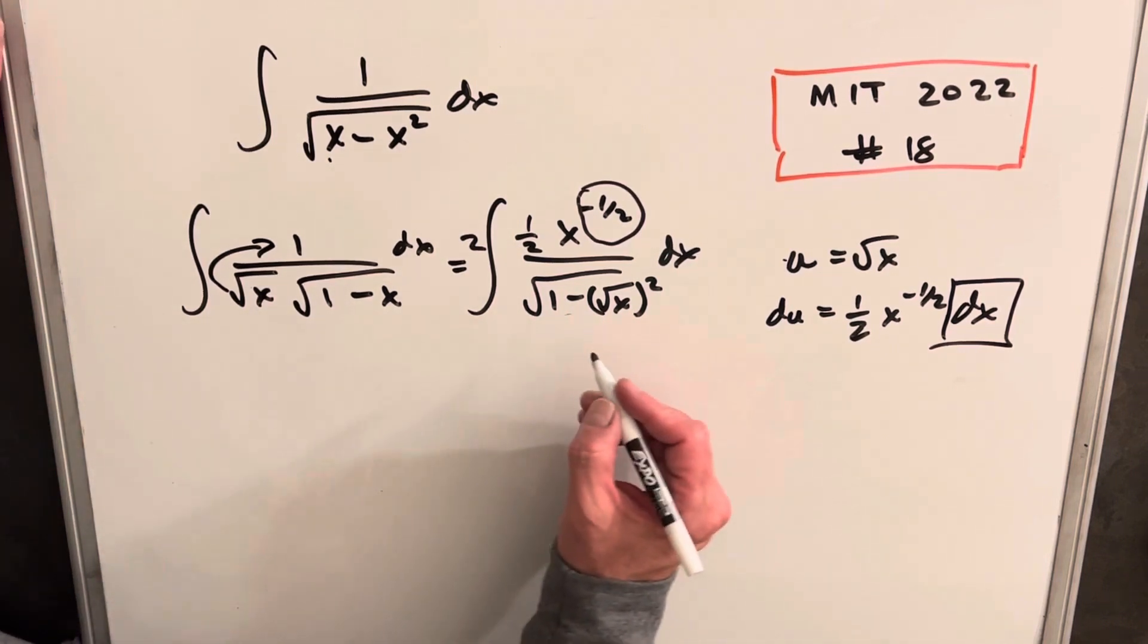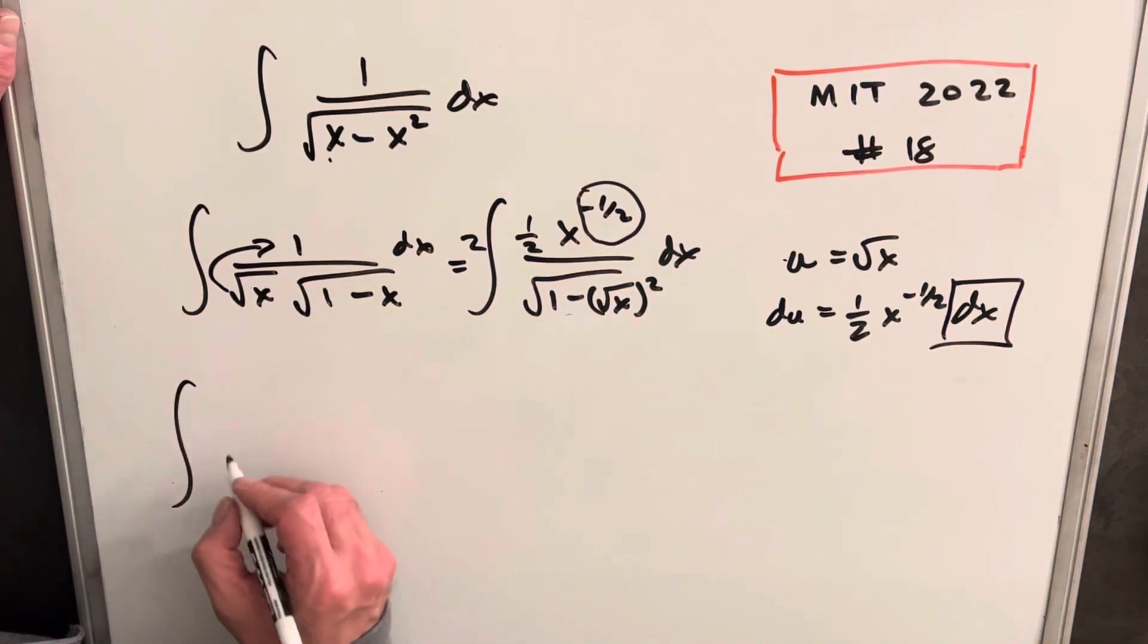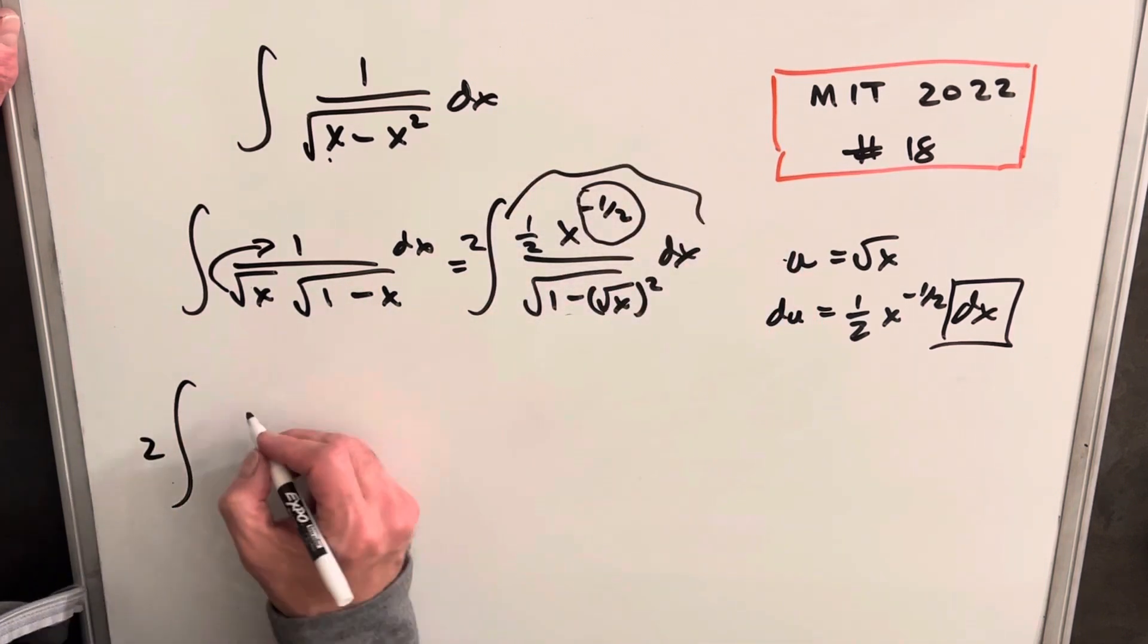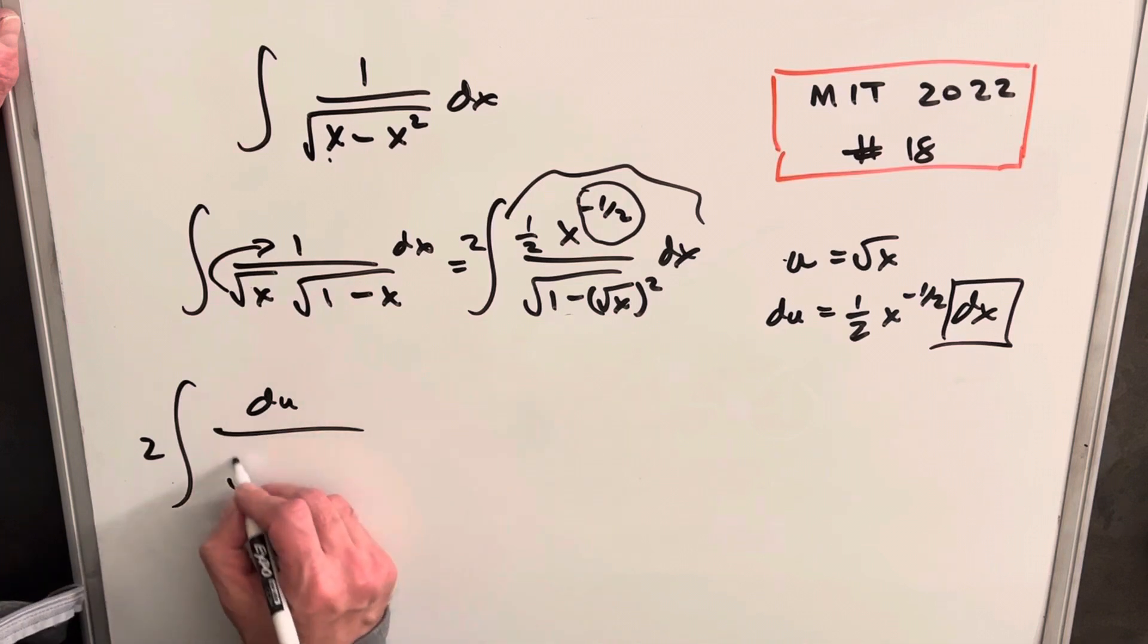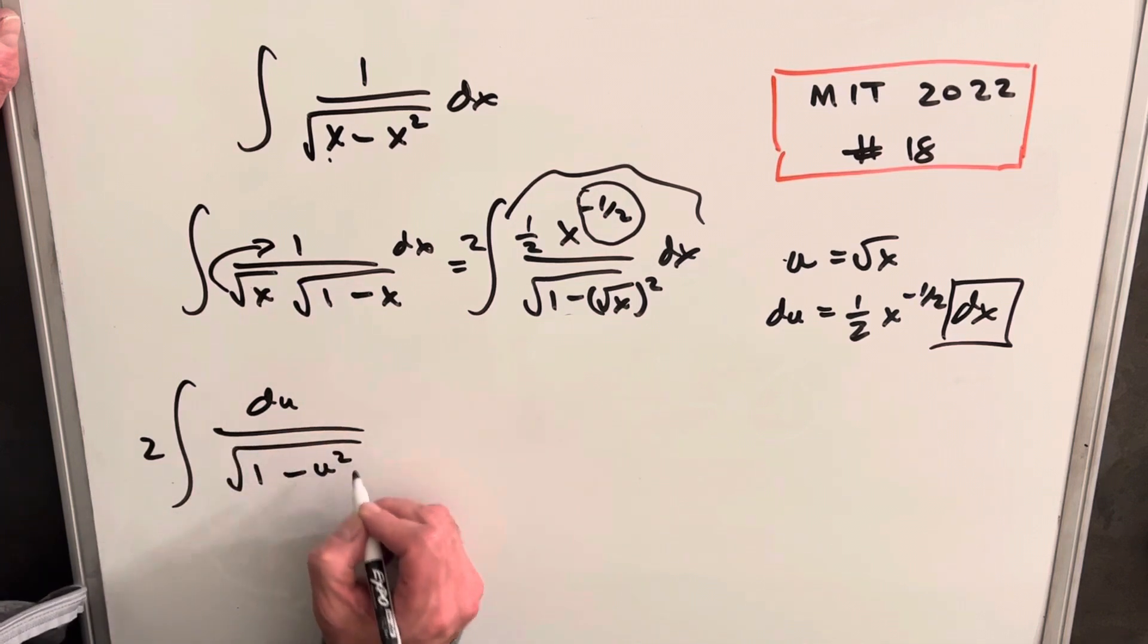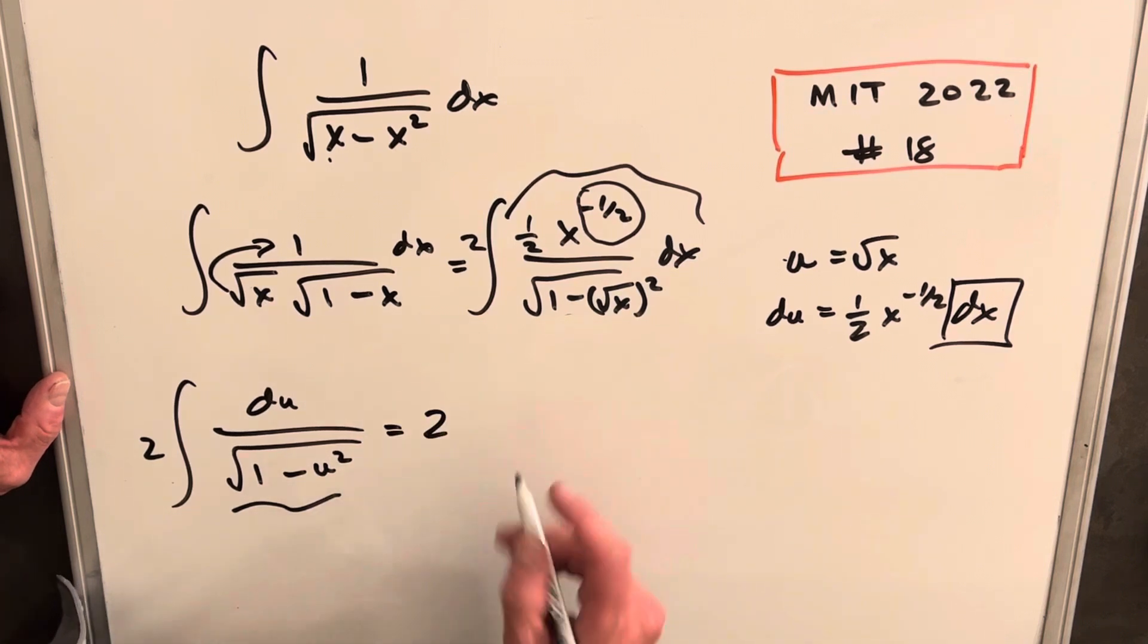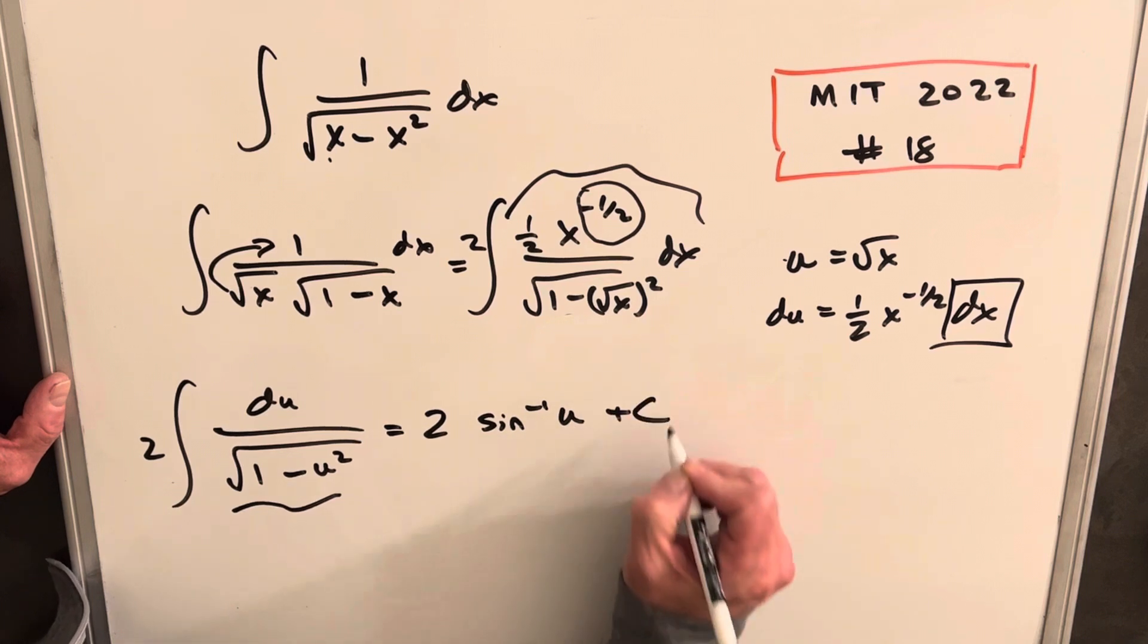And then let's rewrite this with our substitution now. So we're going to have two. The whole numerator is du. So this is going to be du over the square root of one minus u squared. This is actually a very common integral. So we're just going to use the formula for this. And it's going to be sine inverse of u plus c.